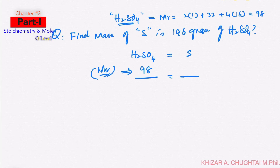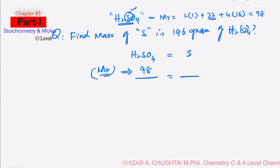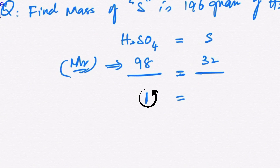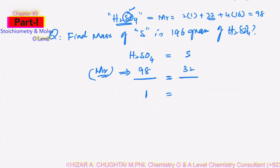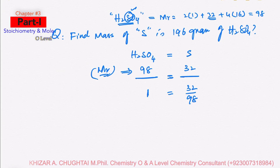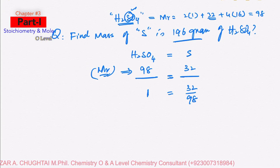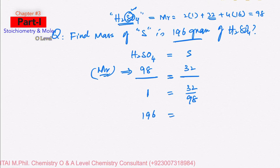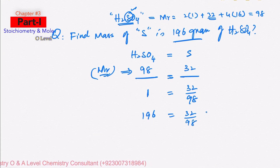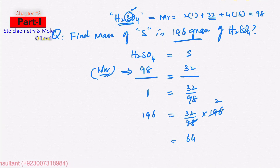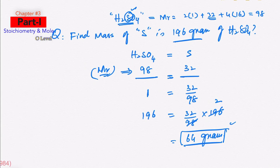Whenever you find any information from a formula, you start from the Mr. The Mr of H₂SO₄ is 98. In 98 grams of H₂SO₄, the mass of sulfur present is 32 grams. If we have 1 gram of H₂SO₄ — the unity step — then the sulfur present is 32 ÷ 98. Since we are using 196 grams of sulfuric acid, the sulfur = (32 ÷ 98) × 196 = 64 grams. So when using 196 grams of H₂SO₄, 64 grams of sulfur would be present.